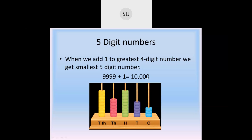This is the place value for 5-digit numbers shown on an abacus. In ones place we have 3 beads, in tens we have 5, in hundreds we have 9, in thousands place we have 6, and in ten-thousands place we have 9. So the number here is 96,953.